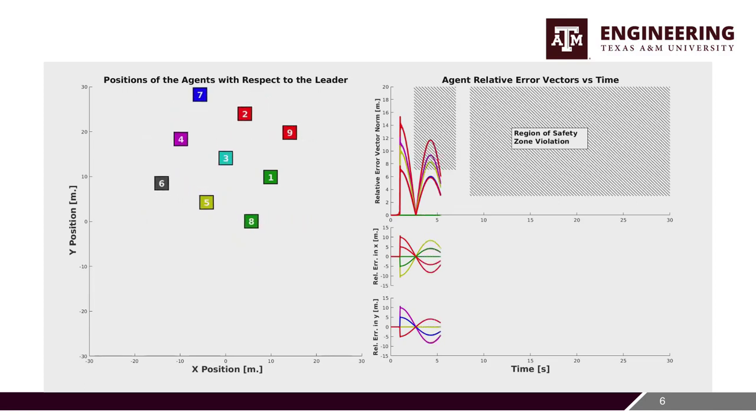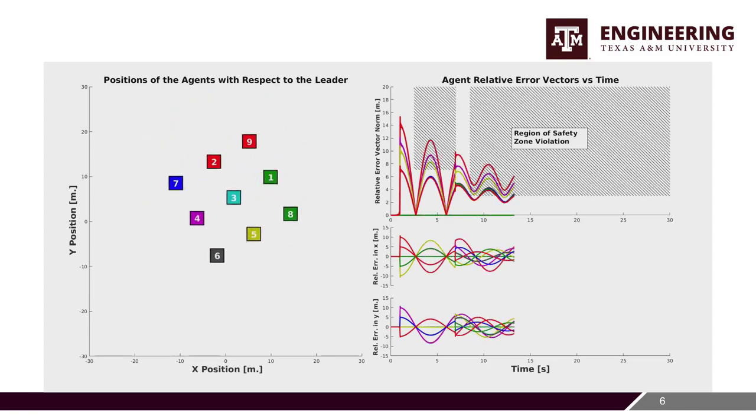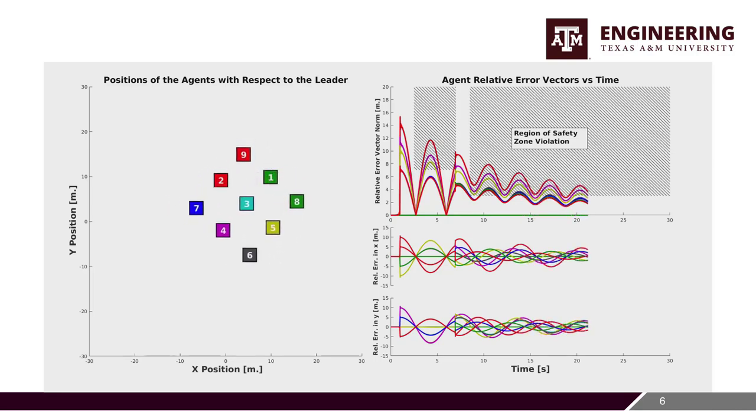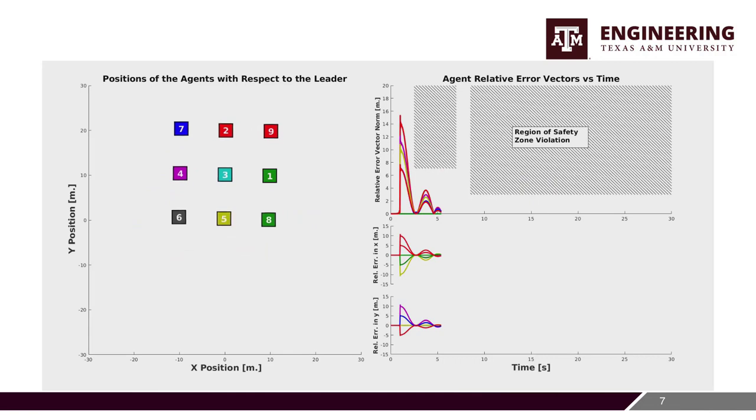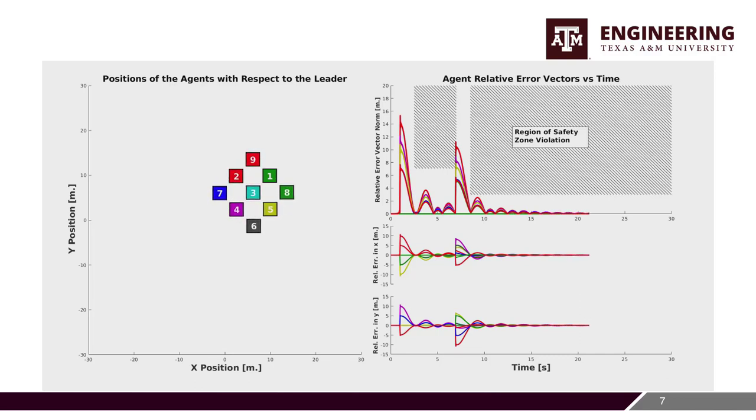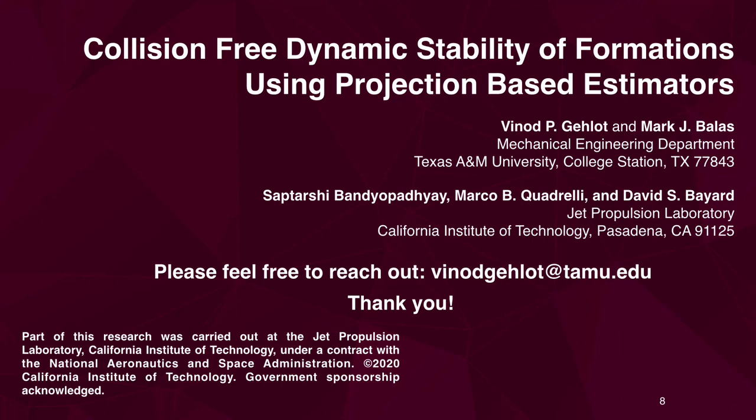Here, a nine-agent formation is undergoing a reconfiguration event. Notice that with the baseline controller, collisions occur. If you augment the baseline controller with our proposed control methodology, you see that the transients are very well behaved. We also see here that we have successfully prevented inter-agent collisions. For all the theoretical details, please refer to our ACC paper. This work wouldn't have been made possible without the help and the constant encouragement of this incredible team. I'm grateful. I'm Vinodh Kulothungan, and if you'd like to reach out to me regarding any technical details or anything else, please feel free to contact me using my email address, vinodh.kulothungan at tamu.edu. Thank you.